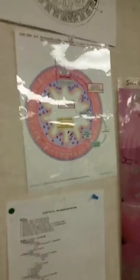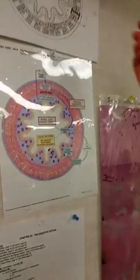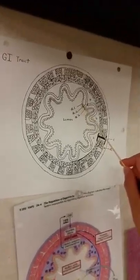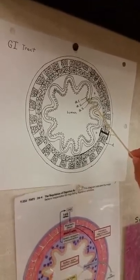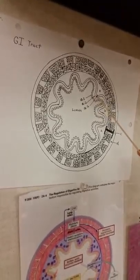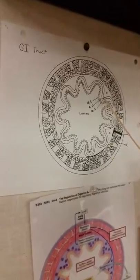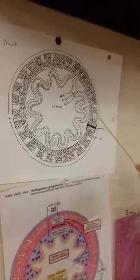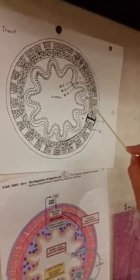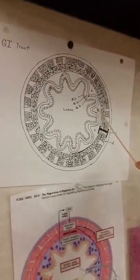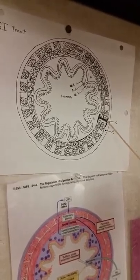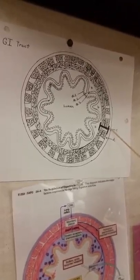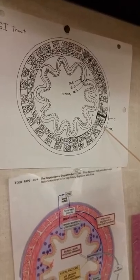Moving on to the GI tract, which is up here. This would be the epithelial tissue. This would be the connective tissue. This layer here would be the muscularis mucosa. And this here would be the tunica submucosa. This layer here would be the tunica muscularis. This layer here would be the tunica serosa.